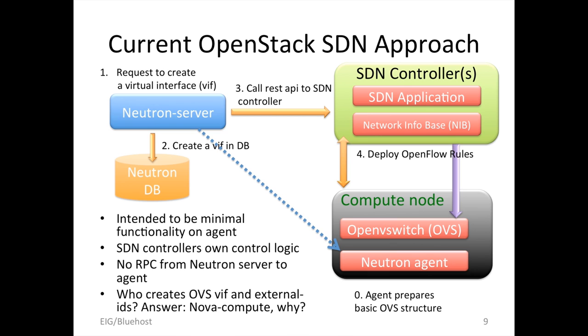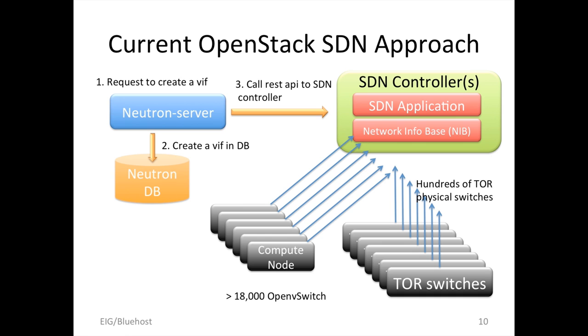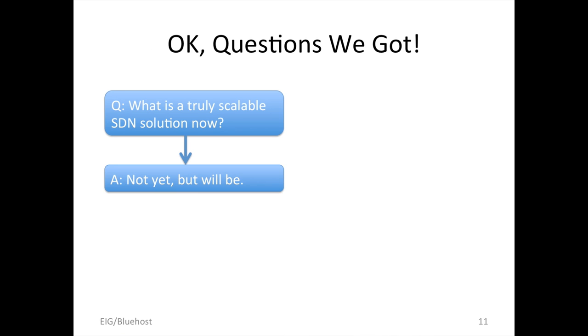Let's talk about how we can apply this framework in our data center, where we're running 18,000 physical servers, each running Open vSwitch — that's 18,000 virtual switches all connected to the SDN controller. Not only that, you also have hundreds of top-of-rack physical switches that all need to contact the SDN controller. The answer: it doesn't scale. We can't use this solution in our environment. So we got a dilemma. We started talking to SDN vendors and controllers about what is a truly scalable SDN solution. The answer: not yet — will be, soon. When? Who knows?